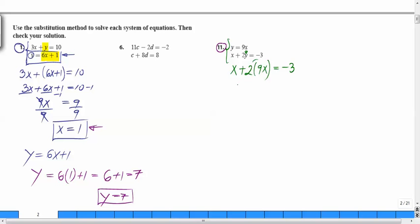Multiply that 2 first. You have x plus 18x equals negative 3. x plus 18x equals 19x. That equals negative 3. 19x divided by 19. Your x will be equal to negative 3 over 19.